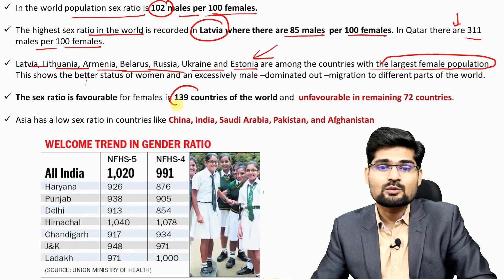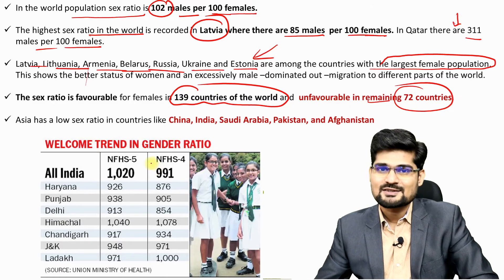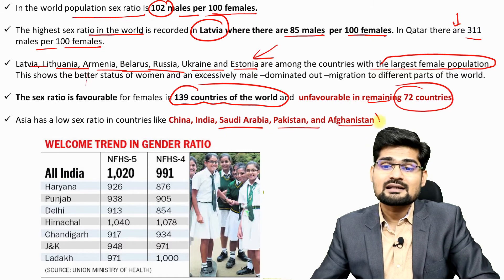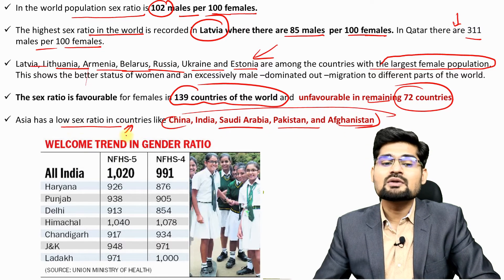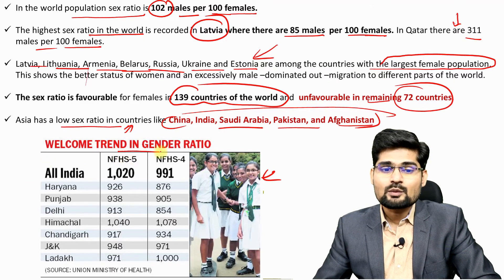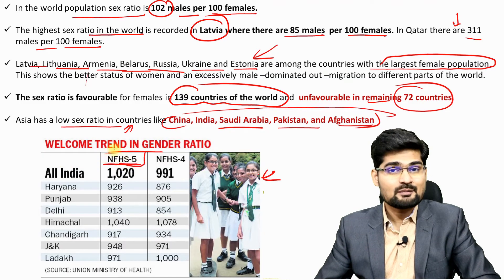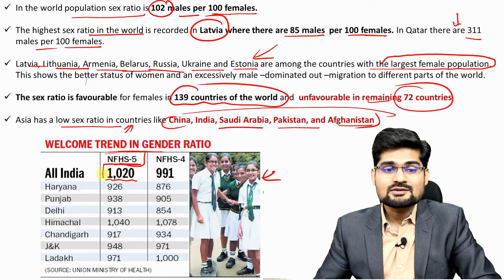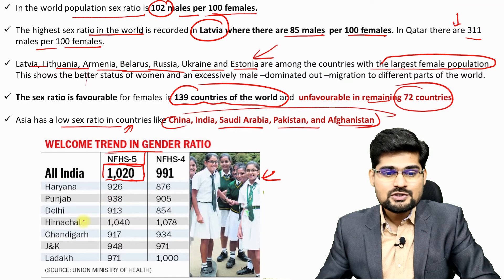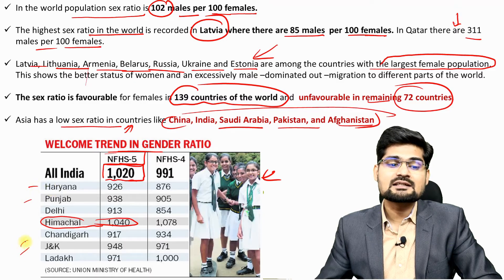China, India, Saudi Arabia, Pakistan and Afghanistan generally show low sex ratios. However, there is a welcome trend — the National Family and Health Survey (NFHS) data shows the sex ratio has risen to 1020 females per thousand males in India, with Himachal Pradesh doing the most commendable job. An increasing trend in sex ratio is seen broadly across India.